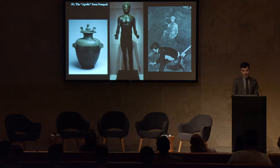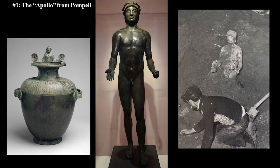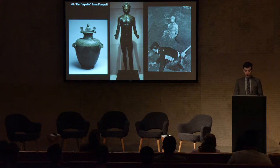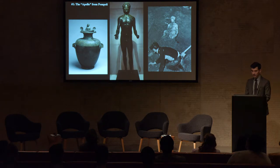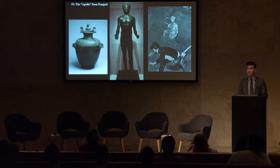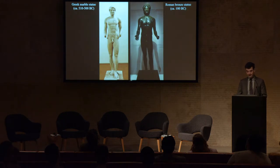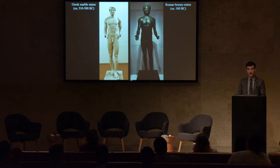My first example is this statue discovered in a house in Pompeii in 1977. An excavation photo at right reveals that the statue was found with his tray attachment still in his hands, leaving no doubt as to his function. The Roman owner of the house was a wealthy collector of Greek artifacts, including a bronze hydria like the one on the left, which dates to the mid-5th century BC, found in the same room as the tray bearer. It is the statue, however, that best demonstrates the owner's taste for the antique.